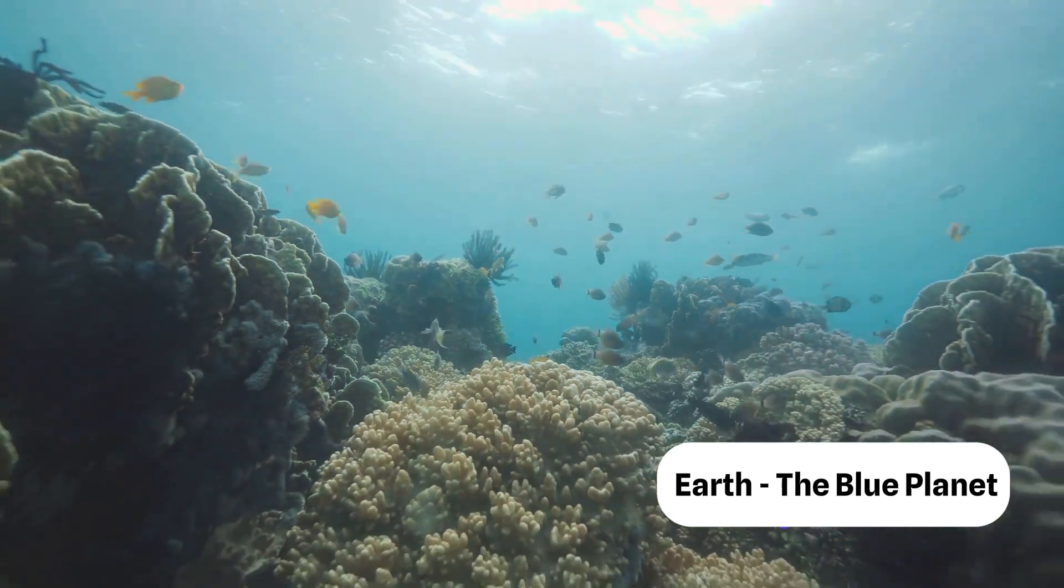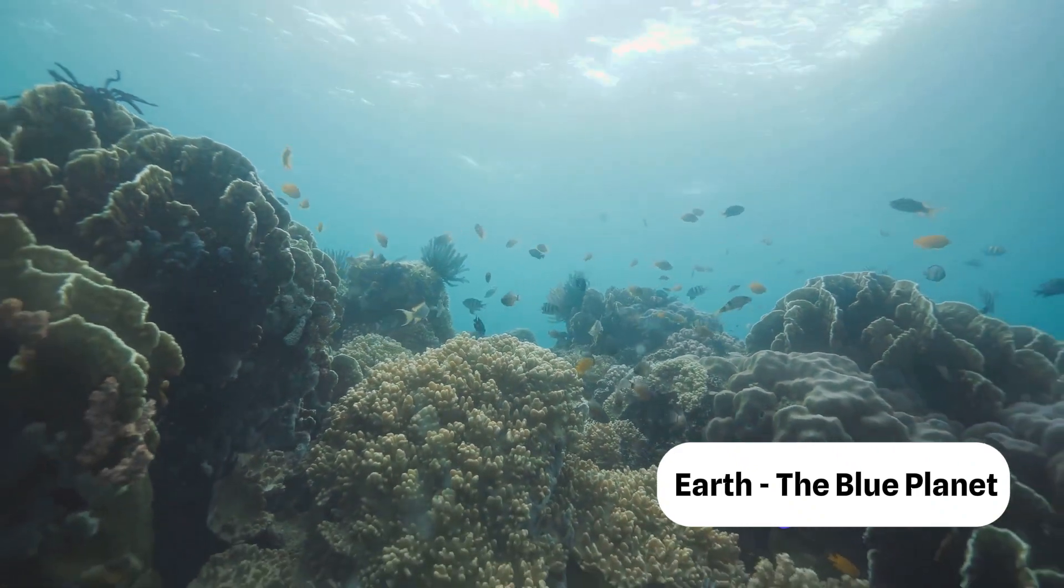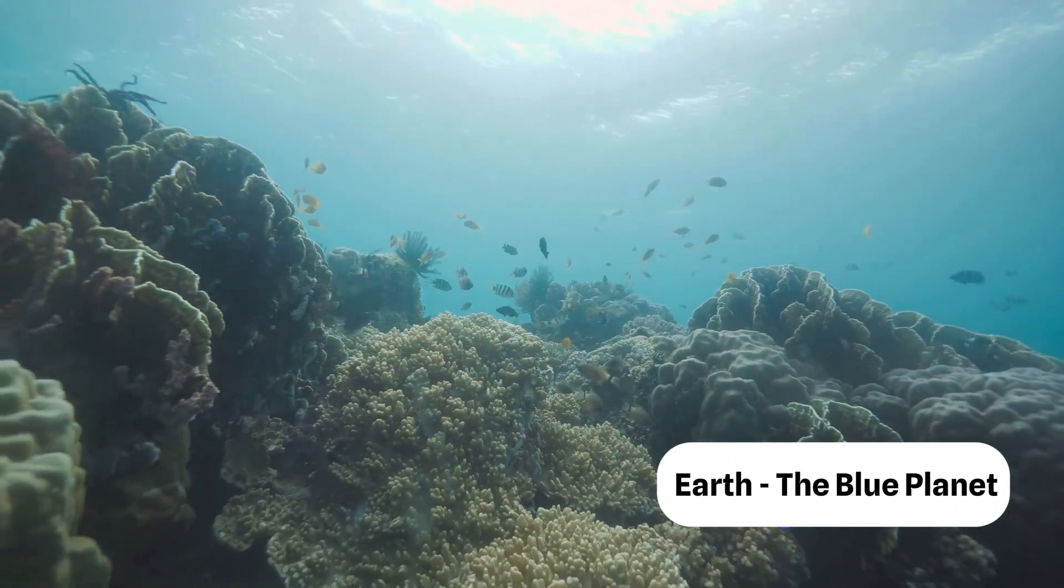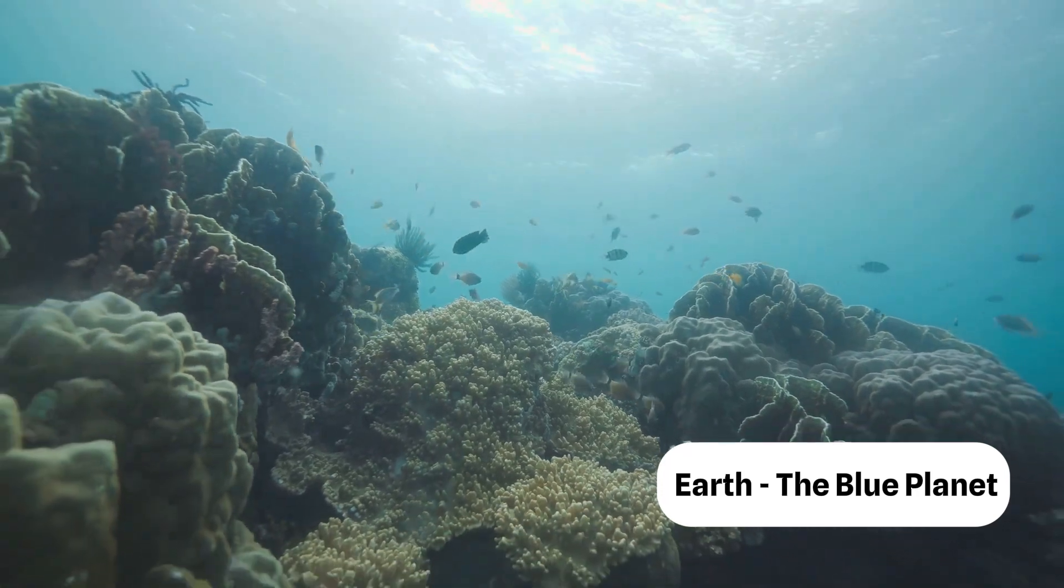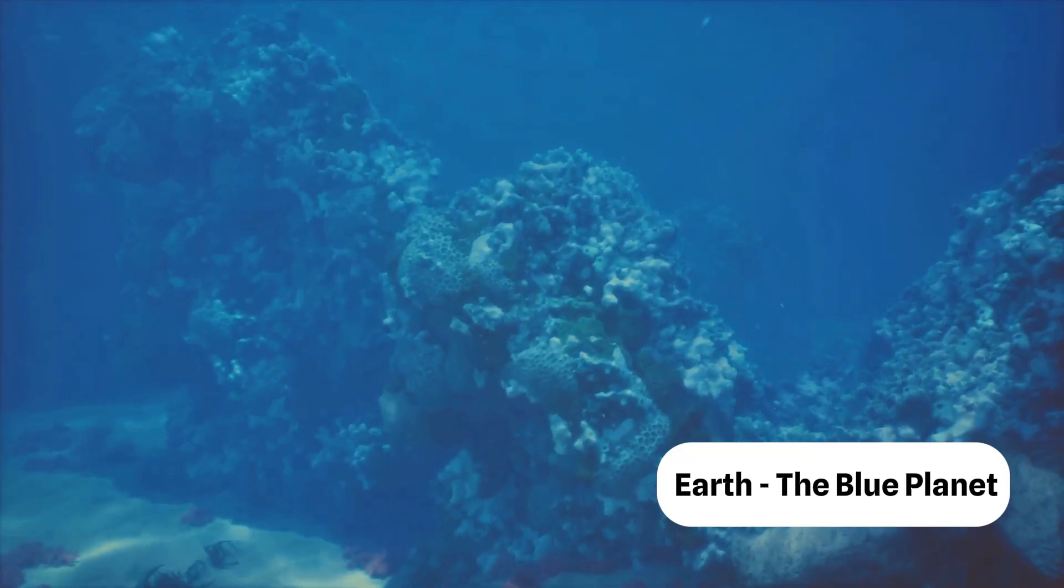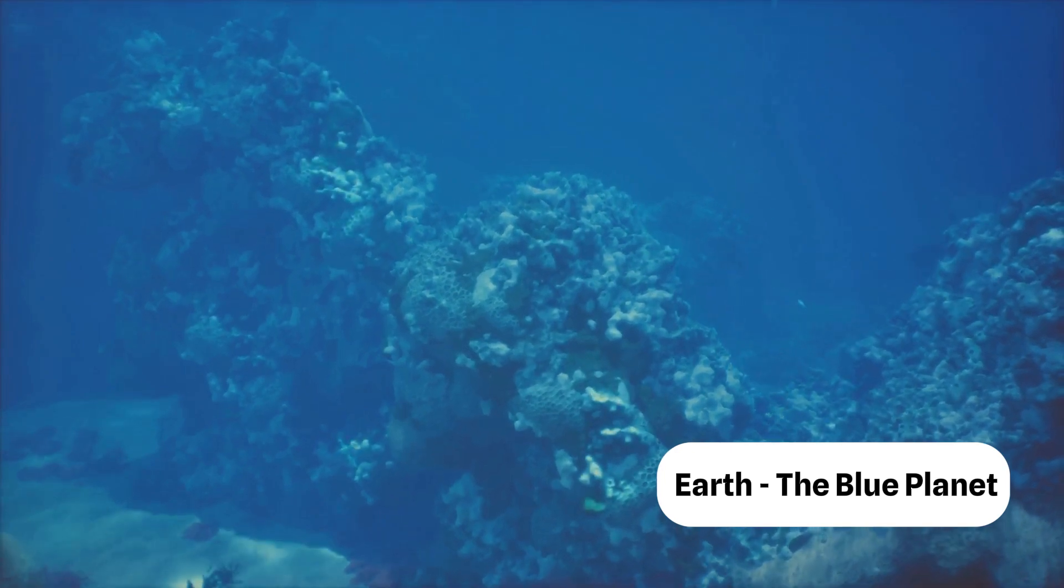Speaking of water, let's talk about Earth's blue oceans. Covering more than 70% of our planet's surface, these vast bodies of water not only give Earth its beautiful blue hue when seen from space, but they also play a major role in regulating our climate, making Earth a habitable place.